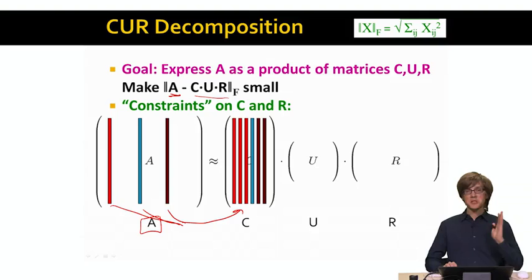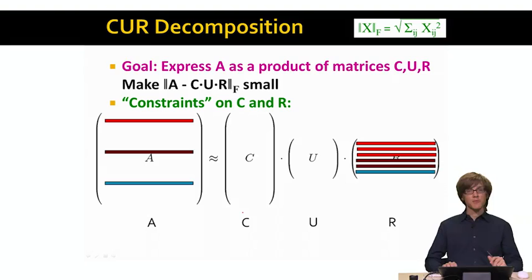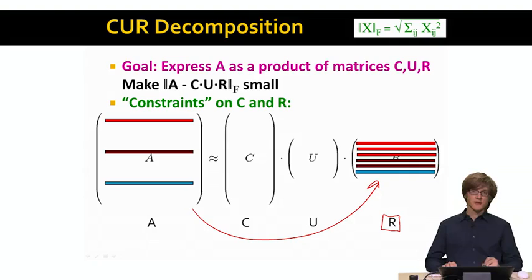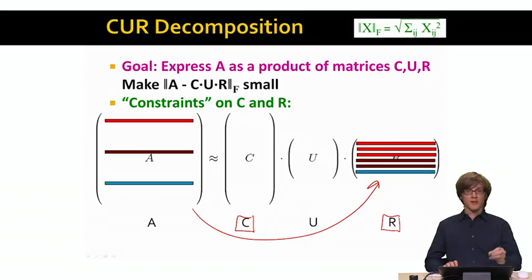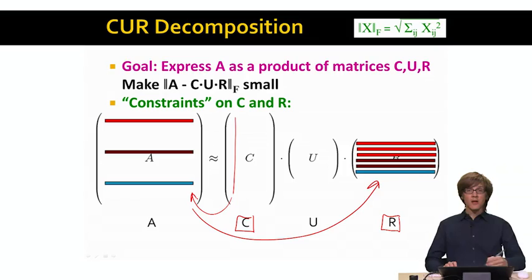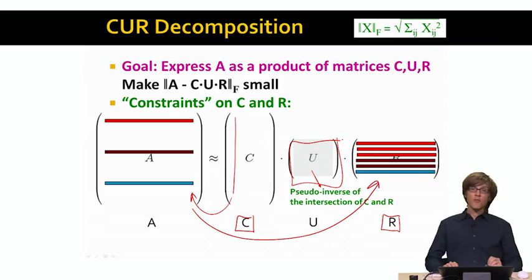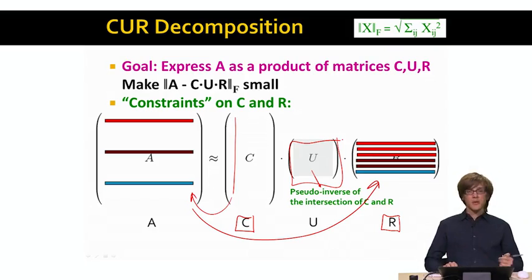Similarly, we will take matrix R and do the same but now for rows — we will pick a set of rows from matrix A and put them into R. R stands for rows and C stands for columns. So matrix C will contain columns from A and matrix R will contain rows from A. The matrix U is computed as the pseudo-inverse of the intersection of C and R. Selecting rows and columns to put into C and R can be done very fast, which means the whole computation will be very quick and easy.